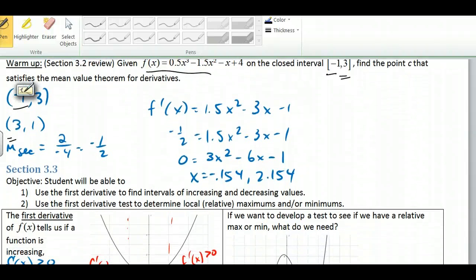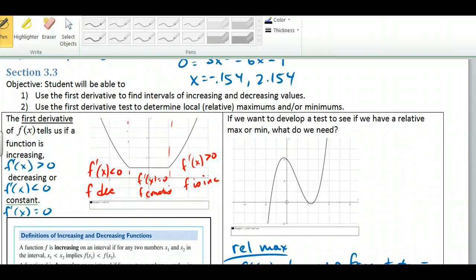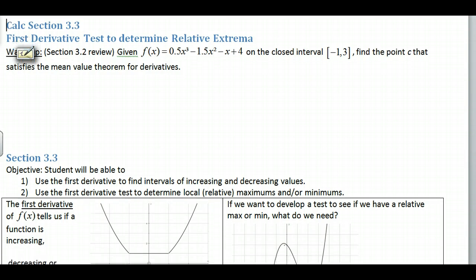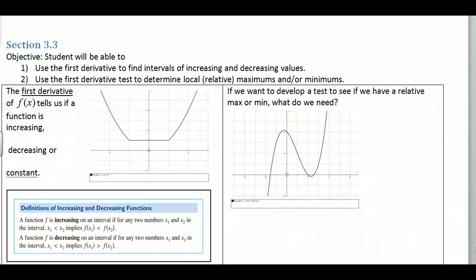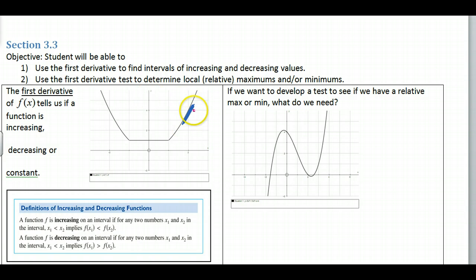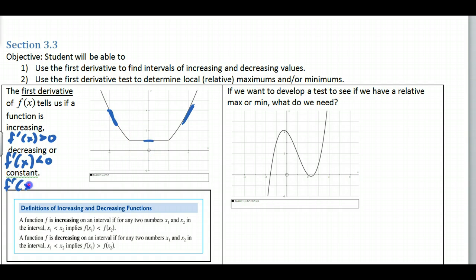Moving on to the first derivative — the first derivative tells us a lot about the function. First of all, it tells us if we are increasing, decreasing, or constant. Our first objective today is to use the first derivative to find the intervals of increasing and decreasing values. The second objective is to find where relative maxes and relative mins come in. If the slope of the tangent is positive, that tells me that my function is increasing — so increasing is f prime of x greater than zero. Decreasing is f prime of x less than zero, and constant is where f prime of x equals zero.